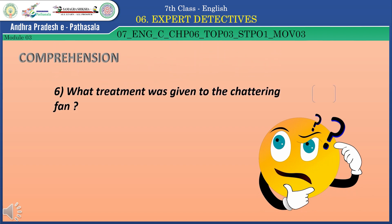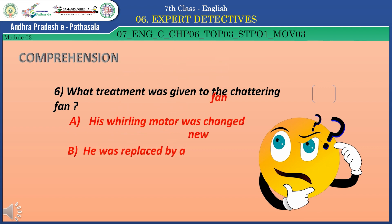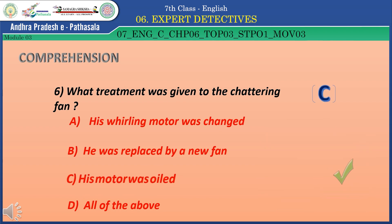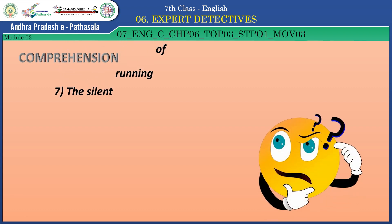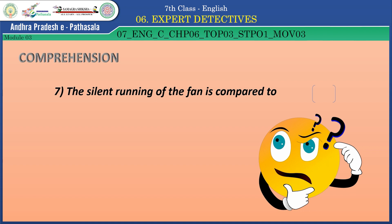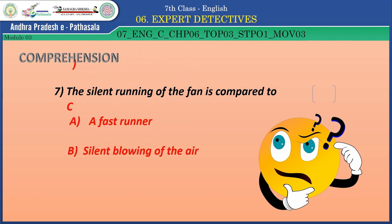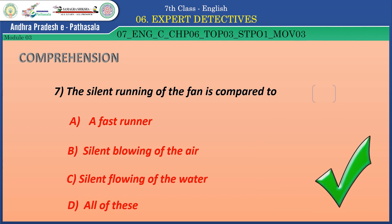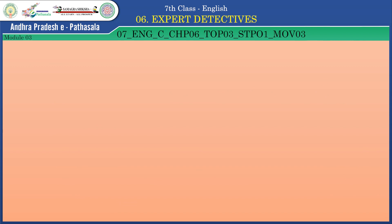Question 6: What treatment was given to the chattering fan? Option A: His whirling motor was changed. Option B: He was replaced by a new fan. Option C: His motor was oiled. Option D: All of the above. The correct answer is Option C — his motor was oiled. Question 7: The silent running of the fan is compared to — Option A: A fast runner. Option B: Silent blowing of the air. Option C: Silent blowing of the water. Option D: All of these. The correct answer is Option C — silent blowing of the water.